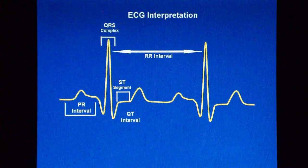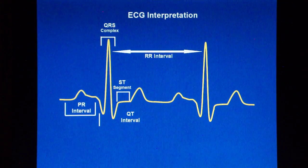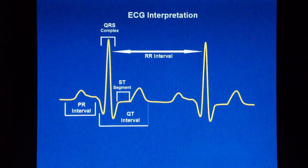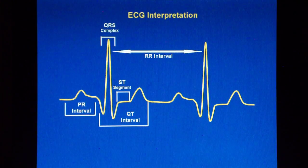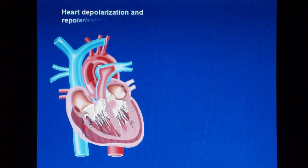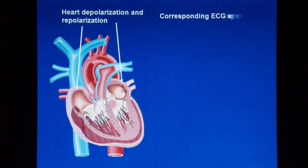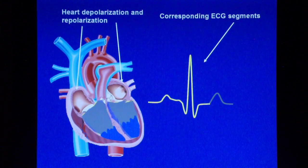The QT interval represents the ventricular depolarization and repolarization. A prolonged QT interval can be diagnostic of susceptibility to a certain type of disturbance of the normal heartbeat, termed tachyarrhythmias. In conclusion, the ECG is a recording of the electrical activity of the heart, and provides information about the heart rate, the heart rhythm and health.